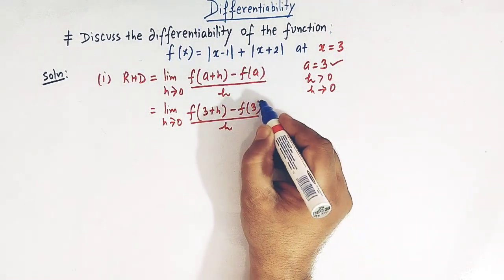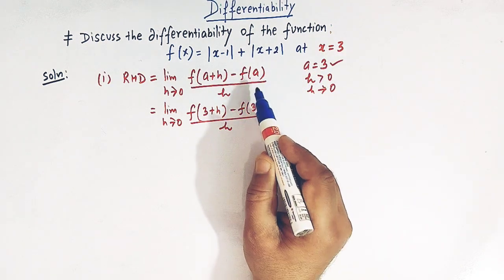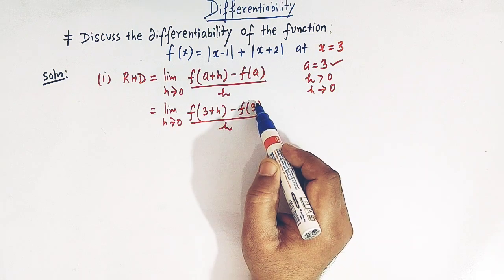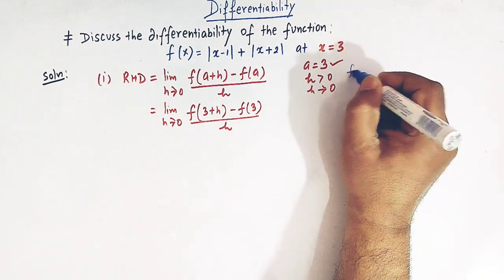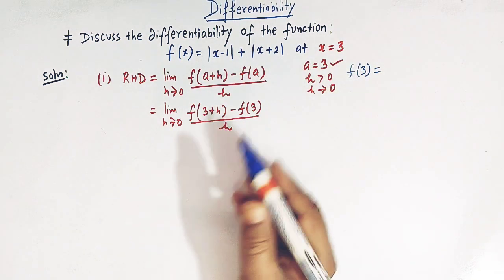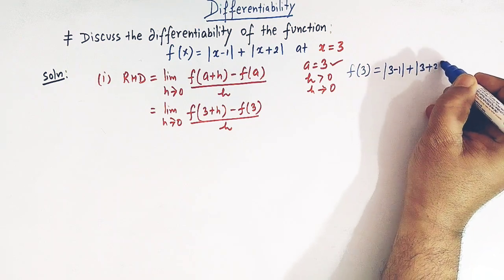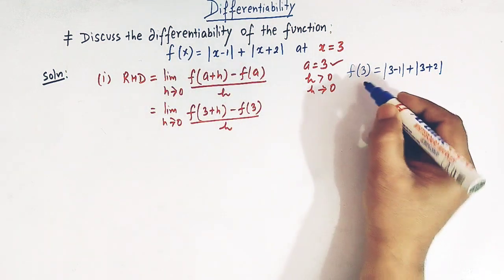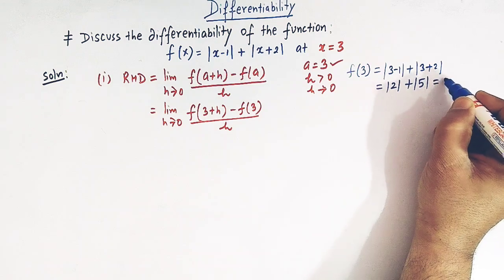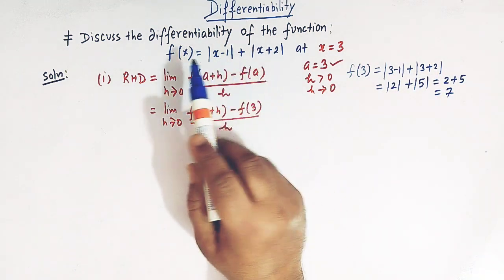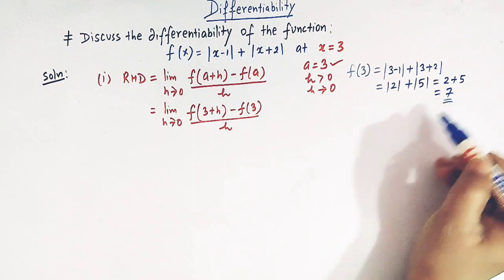Let us first find the value of the function at x = 3, since this value is required for both the right hand and left hand derivative. f(3) = |3 - 1| + |3 + 2| = |2| + |5| = 2 + 5 = 7. So the value of the function at x = 3 is 7.